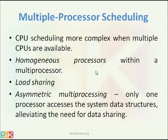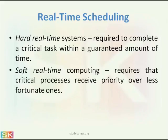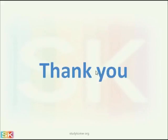In case of asymmetric multiprocessing, only one processor accesses the system data structure, alleviating the need for data sharing. In that case, one processor acts as the master processor and other processors act as slave processors, so data sharing may be required. For real-time scheduling, hard real-time systems require completing a critical task within a guaranteed amount of time, so we need to schedule hard real-time problems with immediate scheduling of these processes. Real-time computing requires that critical processes receive priority over less critical ones.